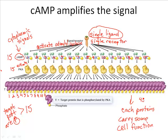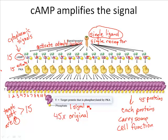So in this simple example, 45 proteins have been activated by PKA. If you think about it, how much have we amplified that single ligand? We've amplified it in this example about 45 times the original — because one individual signal molecule ultimately activated 45 proteins that carried out some specific cellular response.